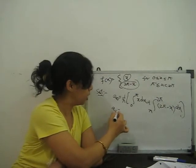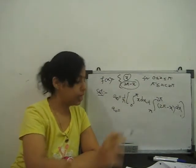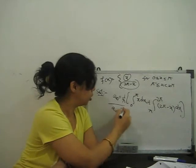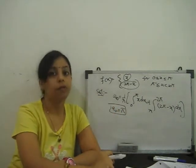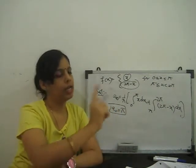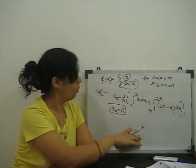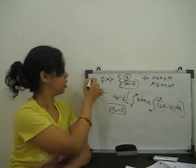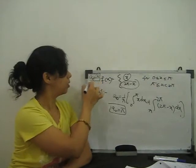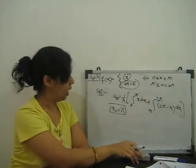When we integrate and put the limits, we get a0 = π. That is our first constant value. Next, we go for an, substituting a0 = π.